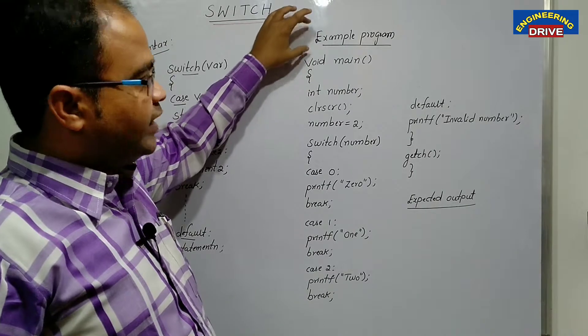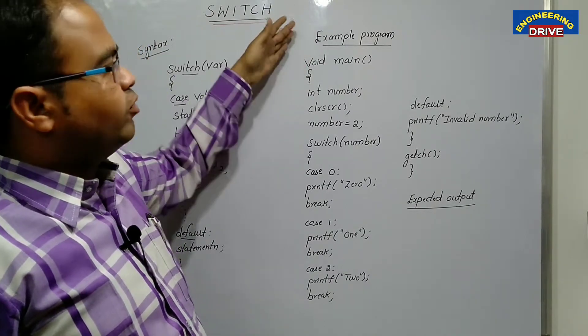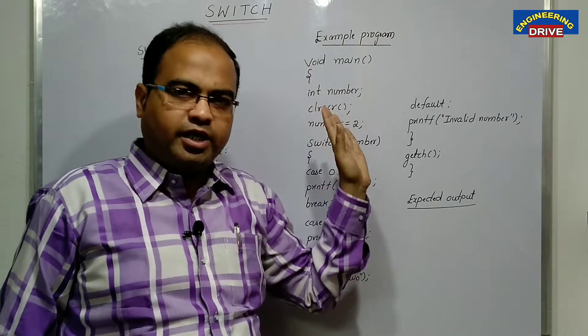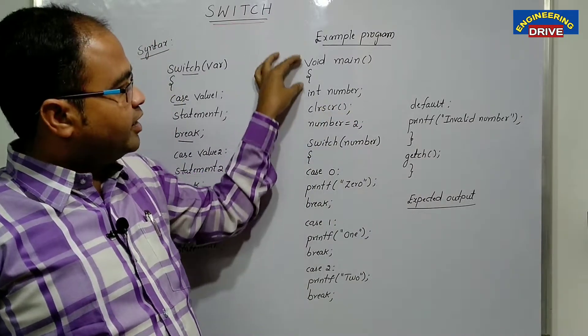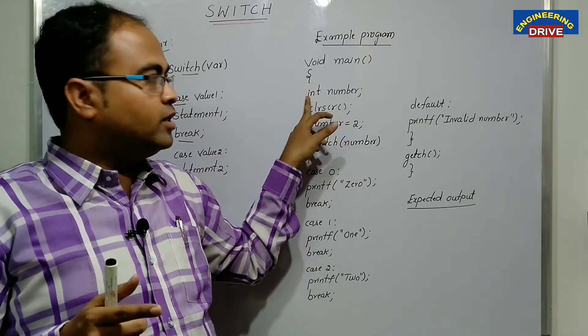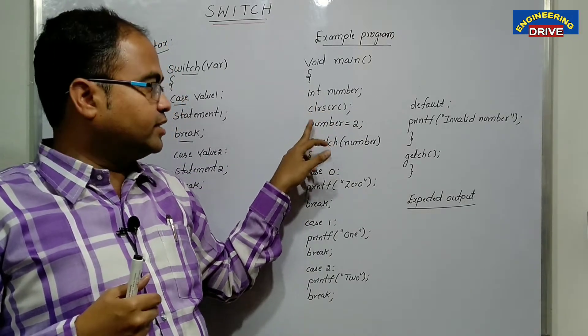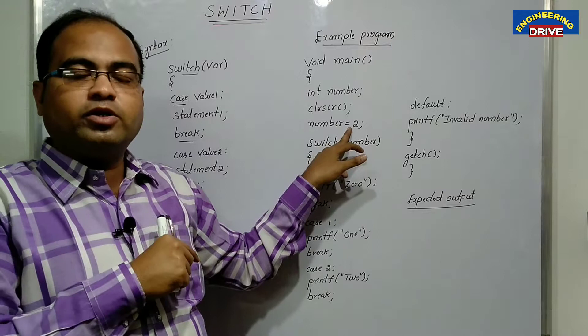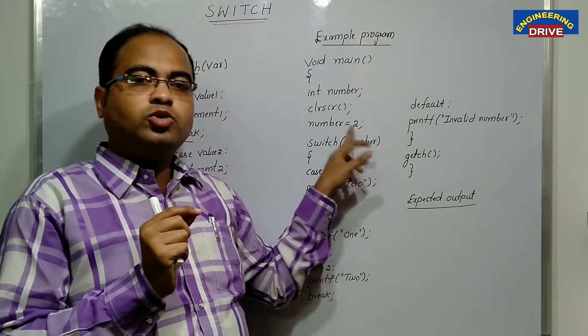So first of all, you, if you, you write your header files, stdio.h conio.h, which is optional here, you can write. Then after writing the header file, this is our program. Here I have took one variable number of this data type int to clear previous output CLRSCR. And what is the value have given to that variable number? Here I have given the value two.